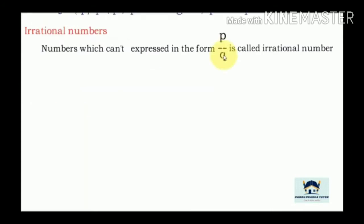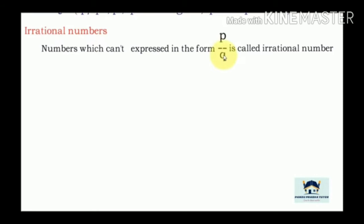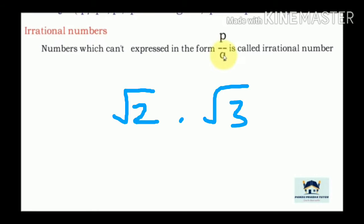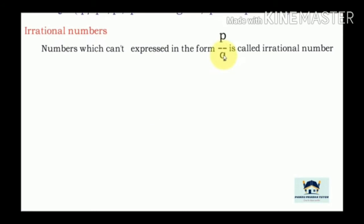Now coming to irrational numbers. Numbers which cannot be expressed in the form of P by Q are called irrational numbers. Rational numbers are expressed in the form of P by Q, but irrational numbers are not in the form of P by Q. Examples include √2, √3, √5, √7, √11.